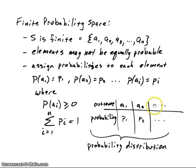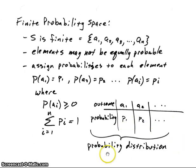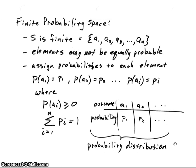Once we have those, we can put them in a table with the outcomes A1, A2, and so on across the top, and the probability for each — P1, P2, and so on — underneath. We call this the probability distribution. What we mean is that we're distributing the total probability of one among all of our outcomes. For these discrete finite probability spaces, we call it the probability distribution.